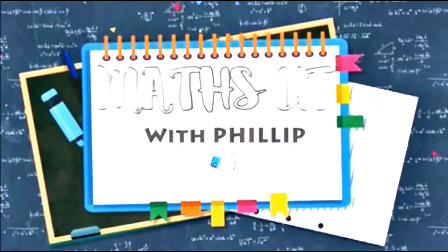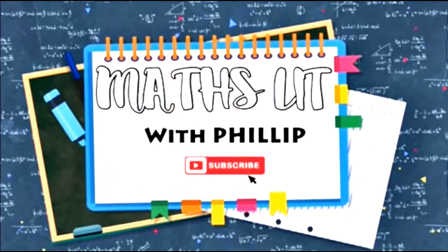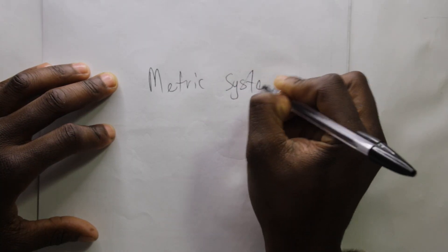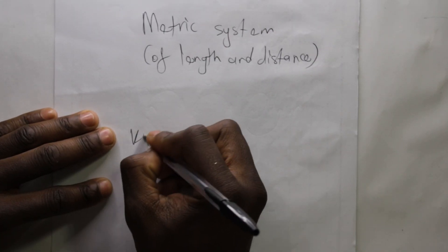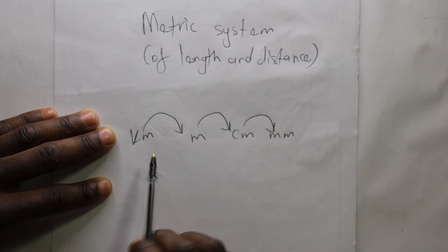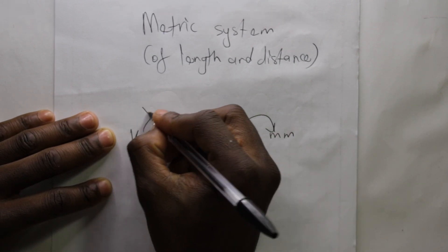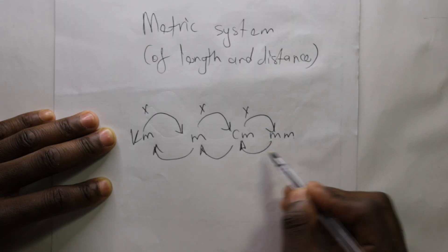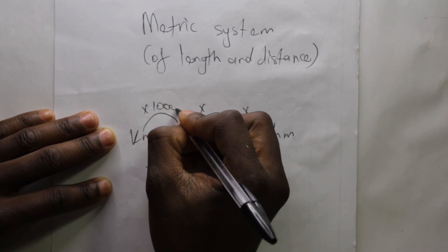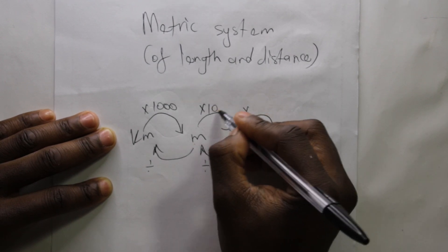Let's begin with the metric system for length and distance, which goes: kilometers, meters, centimeters, and millimeters. Starting from a larger unit to a smaller unit, we multiply. Starting from a smaller unit to a bigger one, we divide. From kilometers to meters we multiply by one thousand; from meters to centimeters we multiply by one hundred.